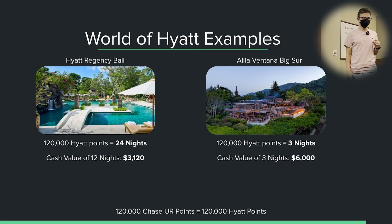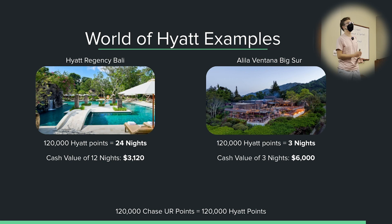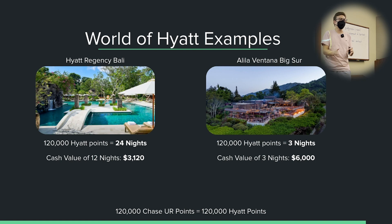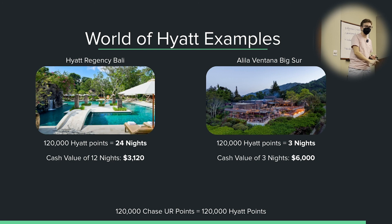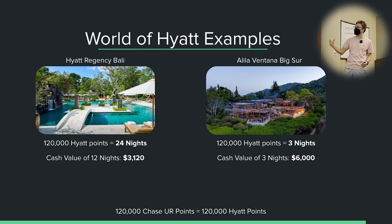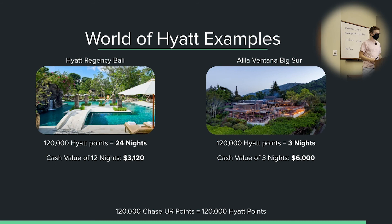What's the difference between the Chase Freedom Flex and the Sapphire Preferred in terms of points? There's no difference — they're actually the same points currency. But here's the thing: if you only hold the Freedom Flex, it does not give you the ability to transfer the points out to partners like Hyatt. If you want to transfer to Hyatt, you must hold either the Sapphire Preferred, the Sapphire Reserve, or the Ink Business Preferred card. If you hold any of those, you can transfer your Freedom Flex points to the Sapphire card and then transfer from there out to Hyatt.